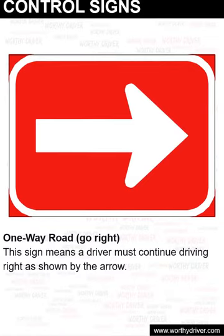One way road, go right. This sign means a driver must continue driving right, as shown by the arrow.